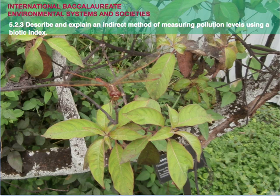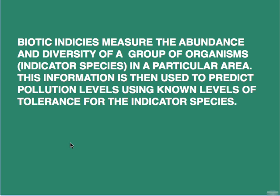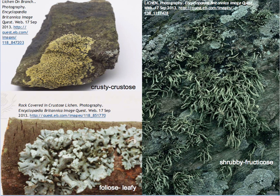Welcome again. Today we consider 5.2.3: Describe and explain an indirect method of measuring pollution levels using a biotic index. Biotic indices measure the abundance and diversity of a group of organisms or the indicator species in a particular area. This information is then used to predict pollution levels using known levels of tolerance for the indicator species.